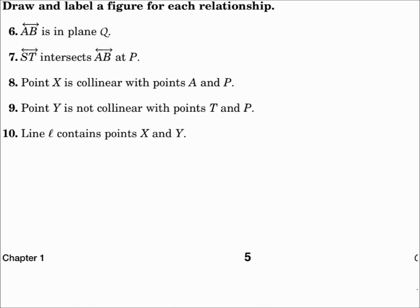Number 7. Line ST intersects line AB at P. Well, I've got two lines and a point. Draw the biggest things first. That would be the two lines. Line ST has points S and T. Line AB intersects. There's point A, there's point B, and they intersect at point P, just like that.